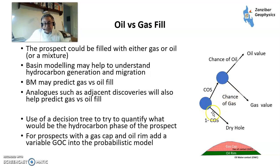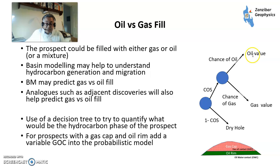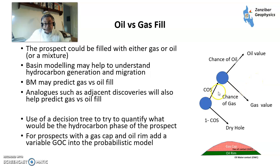So you have one minus the chance of a dry hole, then the chance of having some hydrocarbons, then you have the relative chance of gas, relative chance of oil, an oil value, and a gas value. Particularly in frontier basins, this is a big issue because you really don't understand what you're dealing with. So using this decision tree to look at where things are.